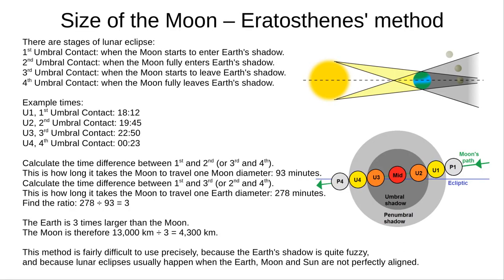The more accurate method was first done by Eratosthenes. This is a little bit more complicated, so bear with me. The earth casts a shadow behind it in space, but since the sun isn't a point of light, it's slightly more spread out. It includes a fully shaded central part, called the umbra, and a partially shaded outer part, called the penumbra.